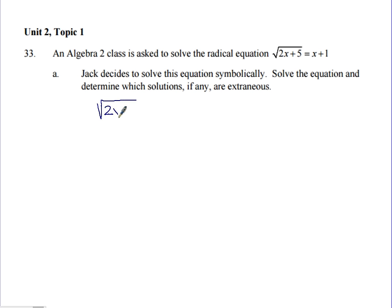We need to solve the square root of the quantity 2x plus 5 equals x plus 1. To undo the square root, we use the inverse — the inverse of square rooting is squaring. So we're going to square both sides to undo the square root. That makes the left side become 2x plus 5.